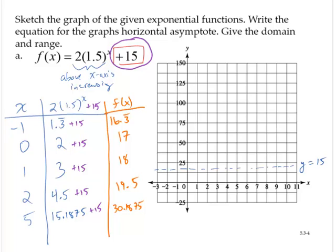And now I'll plot some points. I've got negative 1, 16.3 bar. I've got 0, 17. I've got 1, 18. I've got 2, 19.5. And then I've got 5, 30.1875. So that's going to be about here.